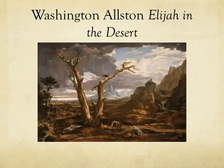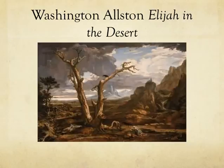Elijah in the Desert by Washington Allston shows the hermit prophet Elijah struggling in the barren wasteland of a desert with no food or water. This image implies hopelessness for Elijah. Ironically, Allston used a bizarre medium to paint this piece — he worked with skim milk as well as paint.